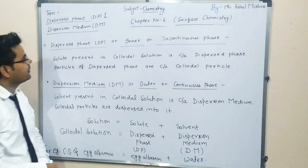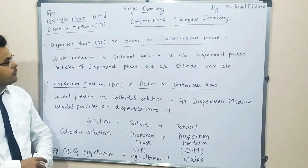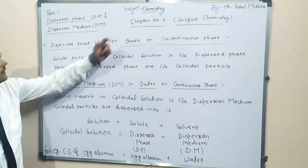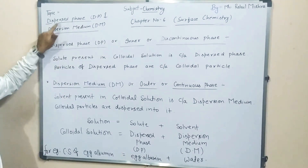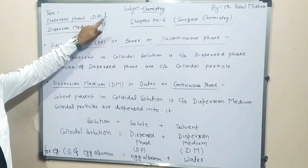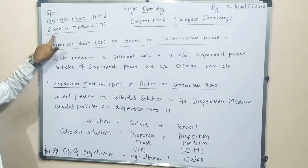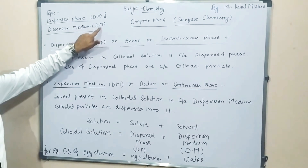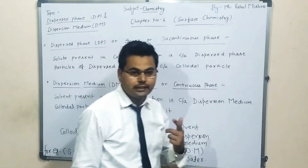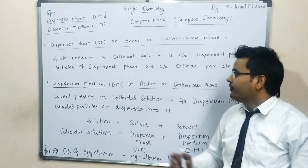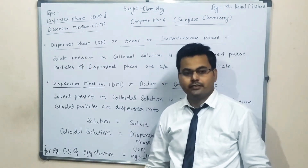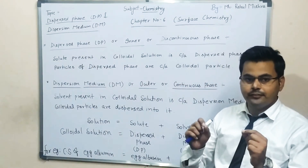Hello students, myself Rahul Mishra and today we will discuss the next topic of chapter number 6. It is dispersed phase, means DP, and dispersal medium, means DM. So this is the next topic of surface chemistry. What is dispersed phase and what is dispersal medium? It is very very simple.